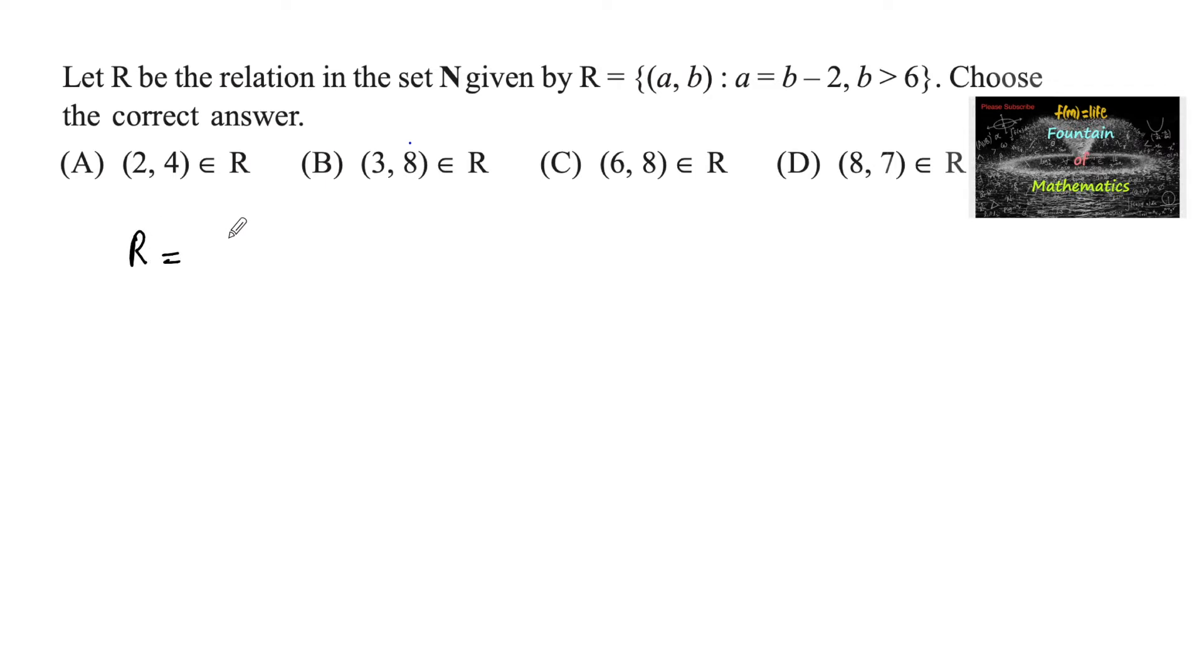Here, the given relation R is equal to (a, b) such that a is equal to b minus 2, where b is greater than 6.